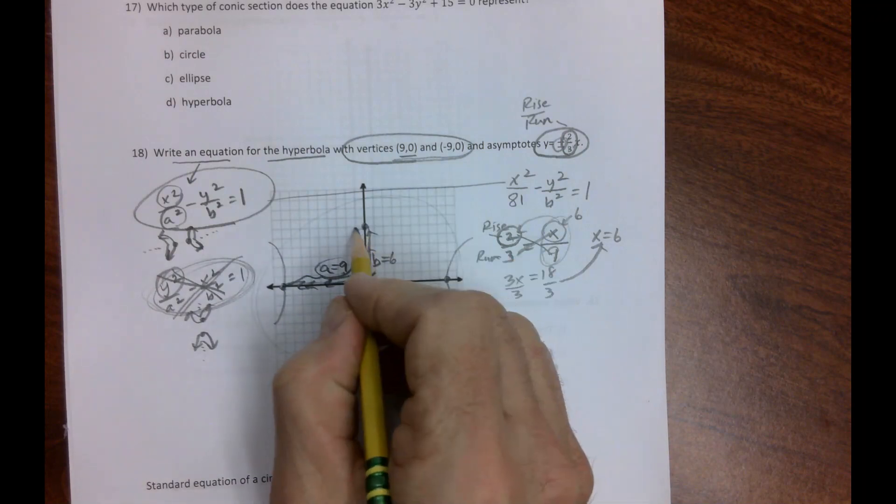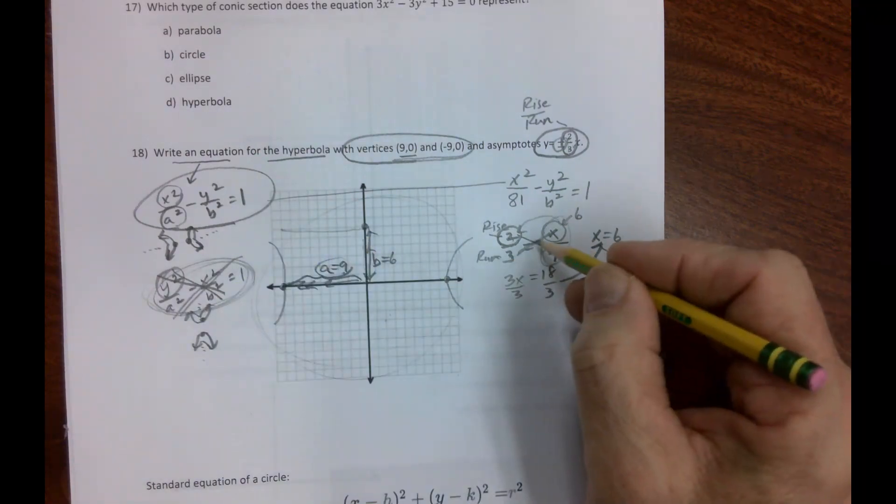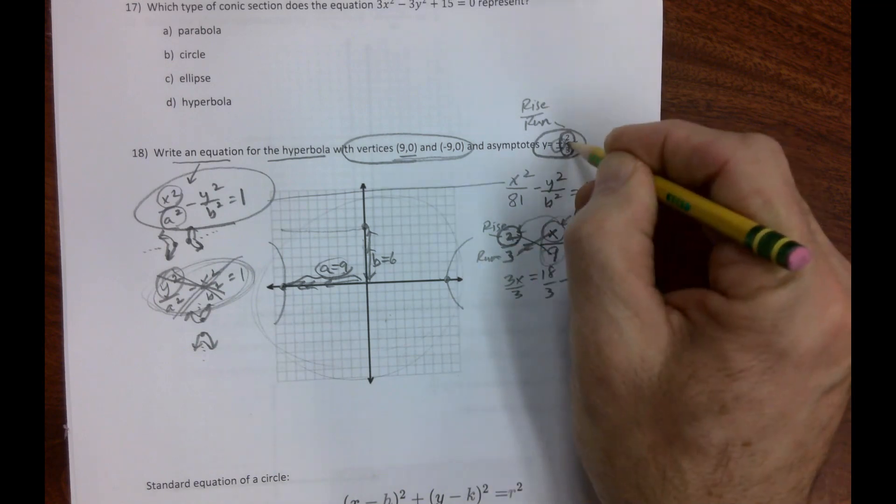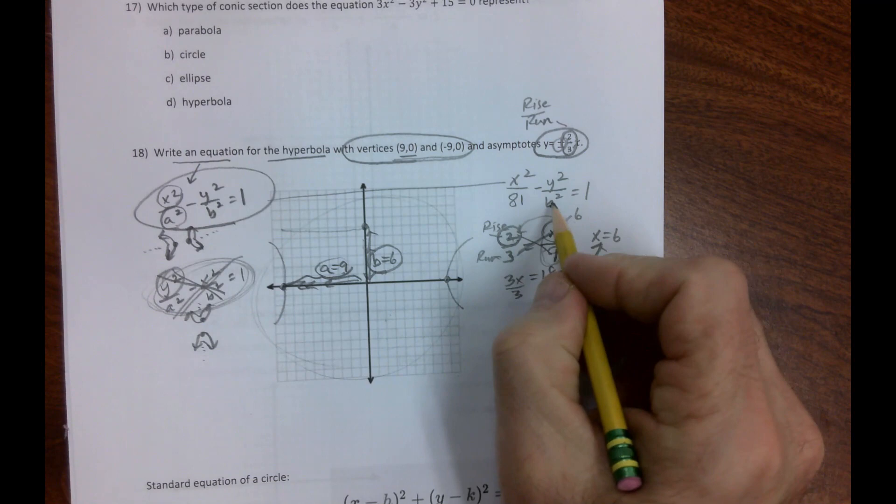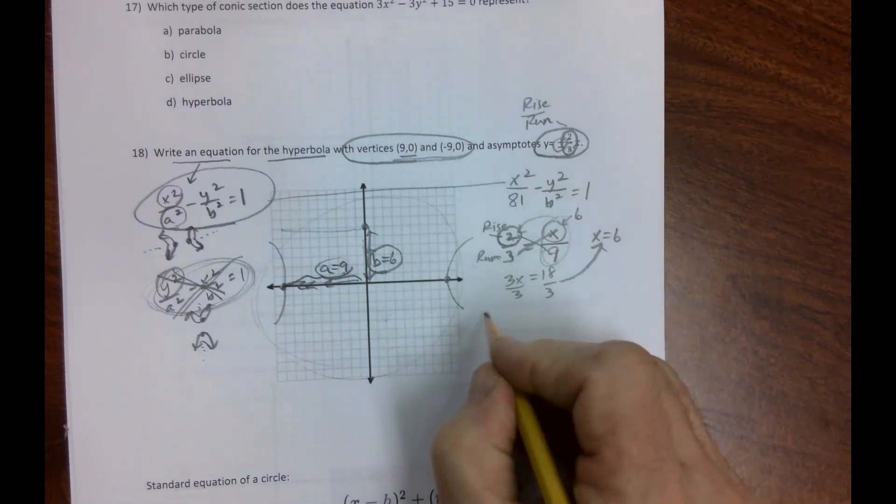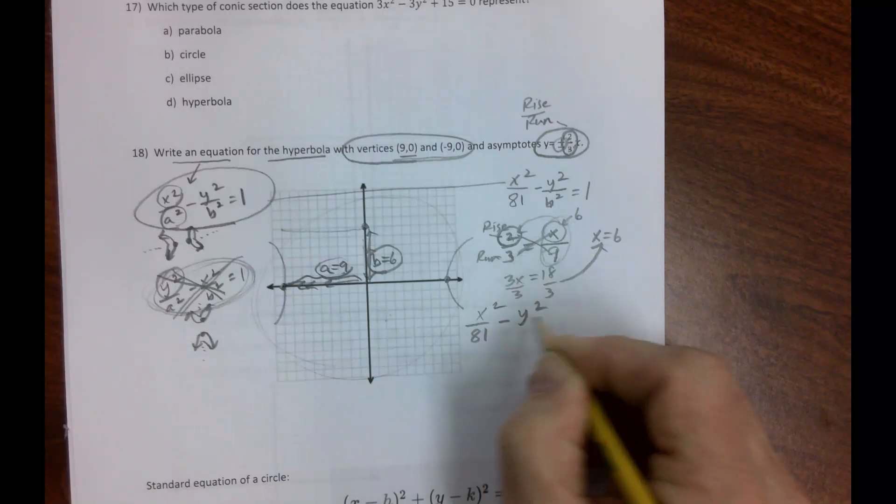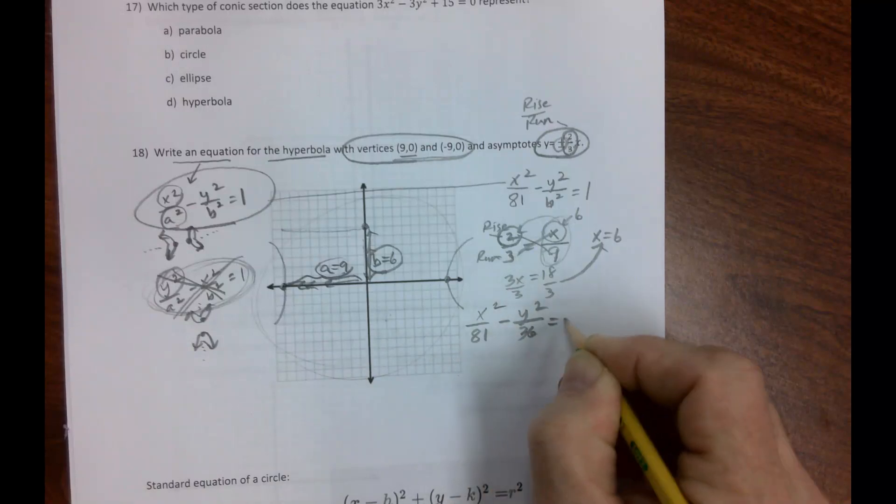It doesn't say draw the equation; this grid is here for us to analyze. Our rise is 6, our run is 9, which reduces to 2/3. If b is 6, then b² is 36. So it's x²/81 - y²/36 = 1.